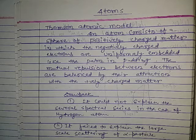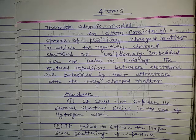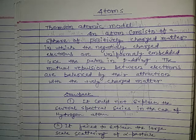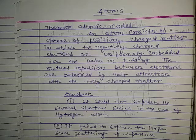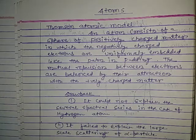The Thomson atomic model states an atom consists of a sphere of positive charge matter in which the negatively charged electrons are uniformly embedded, like the plum in pudding — so it is also called the plum pudding model — or the seeds in watermelon. The mutual repulsion between electrons is balanced by their attraction with the positively charged matter.